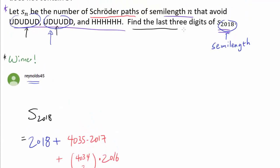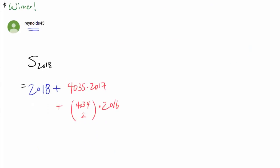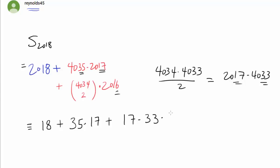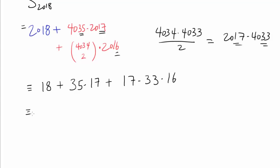And now we only have to find the last three digits. So you can either bash this out, just multiply out the entire thing and find the last three digits. But it's easier to use modular arithmetic. So 2018, we only care about 18, 4035, we only care about 35, 2017, we only care about 17. And 4034 choose 2, that's 4034 times 4033 over 2, also known as, when you divide it out, 2017 times 4033, and this is basically 17 times 33 times 16.